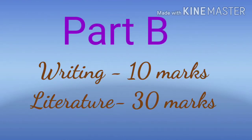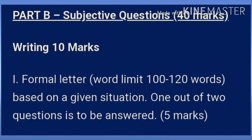Now let's discuss Part B questions: Writing section for 10 marks and Literature for 30 marks. In the writing section, this year only formal letter and report writing will be asked. The first question will be a formal letter based on a given situation. One out of two questions is to be answered. The word limit should be 100-120 words and the marks are 5 — one mark for format, two marks for accuracy and fluency, and two marks for content and coherence.